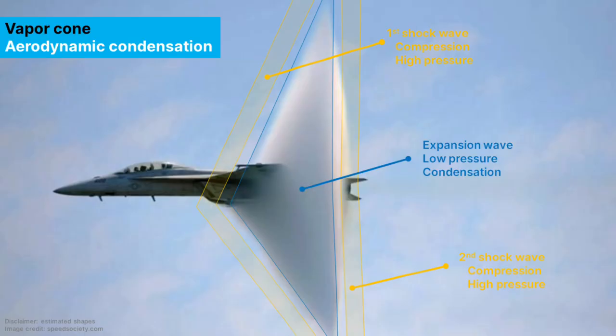Ahead of the vapor cone there's the first shock wave which will compress the air and heat it up. Now right after the compression shock wave there's an expansion wave which again expands the air, lowers the pressure and if the humidity is high enough this will cause the water vapor to condense. And this is the white disc that you see.